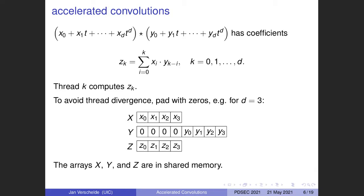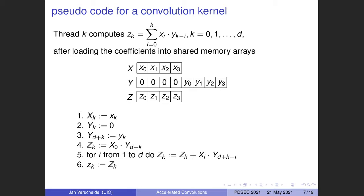The first thread for the constant coefficients has only one multiplication. The last thread will do as many additions and multiplications as the degree. To avoid this thread divergence, we will insert zeros when the input data is copied into shared memory. In particular, as the picture shows, the coefficients of the second input vector are actually shifted.